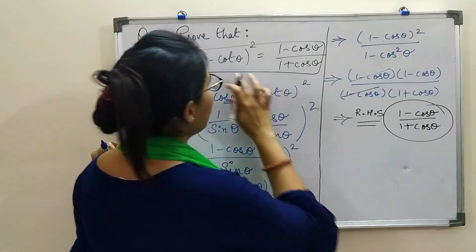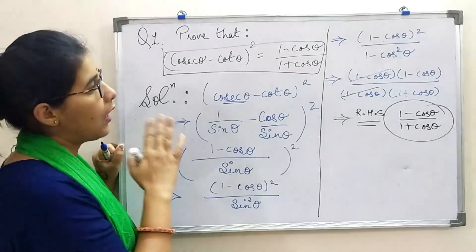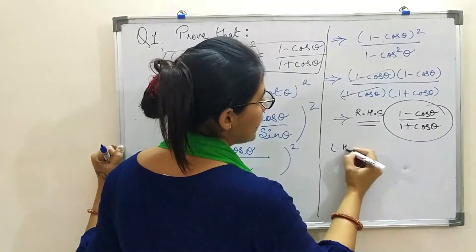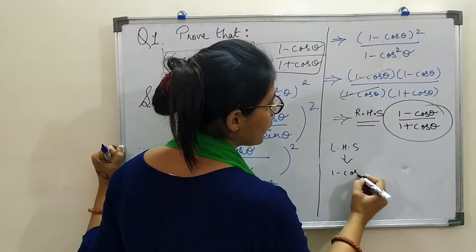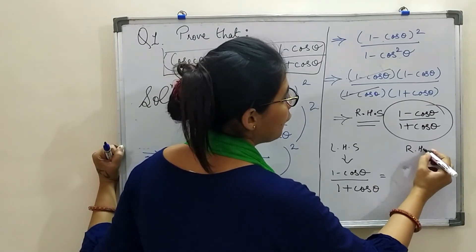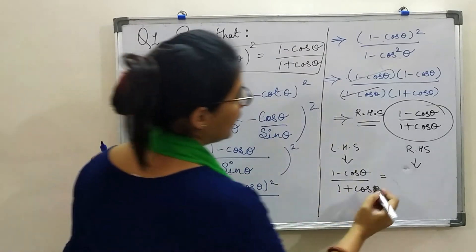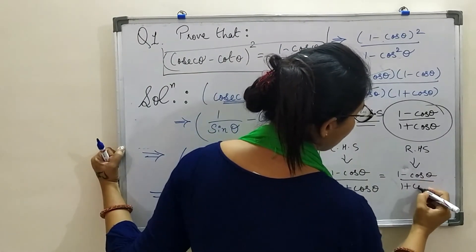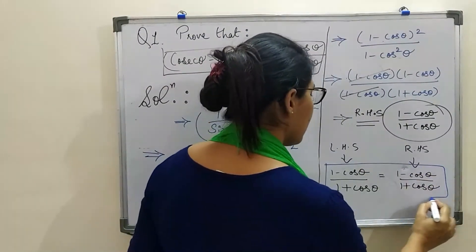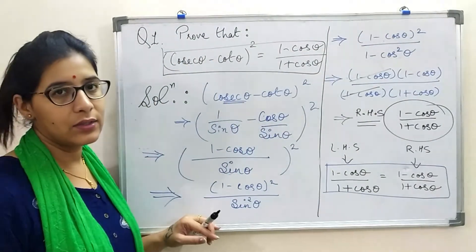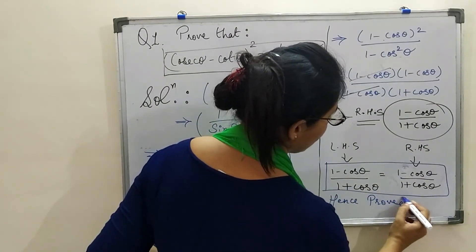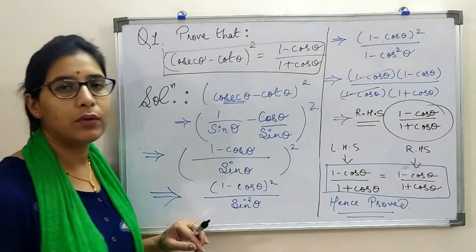In the 'to prove that', we had to prove LHS equals RHS. Now the simplified form of LHS is 1 minus cos theta upon 1 plus cos theta, and the given RHS is also 1 minus cos theta upon 1 plus cos theta. Observing the last most simplified step, we have LHS equal to RHS. Hence, we have completed the last step where both sides are proved equal.